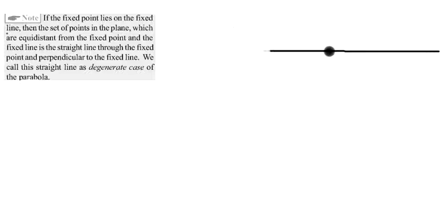The locus of points equidistant from this point and this line is a perpendicular line passing through this point and perpendicular to this line. So the locus of points will trace a perpendicular straight line which is perpendicular to this fixed line.